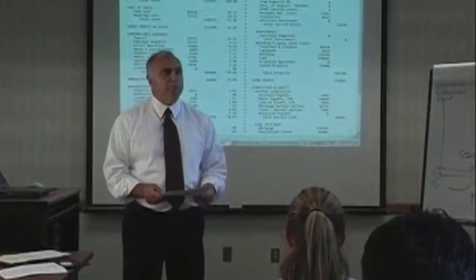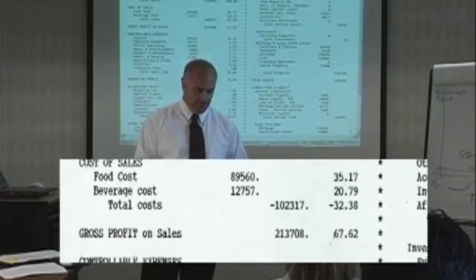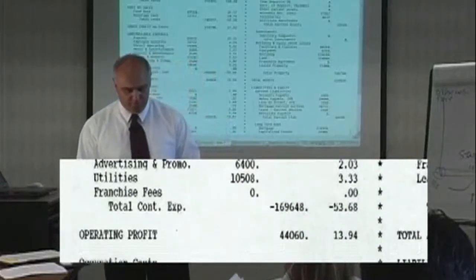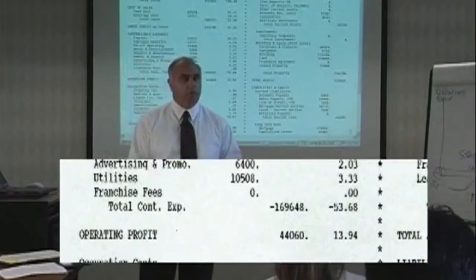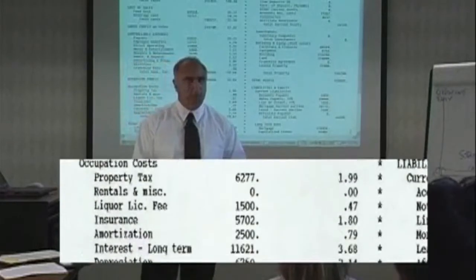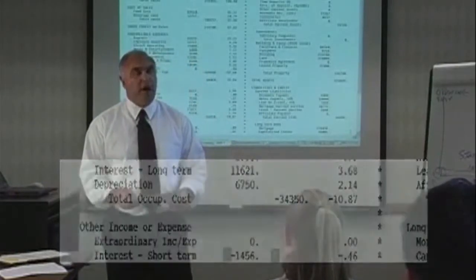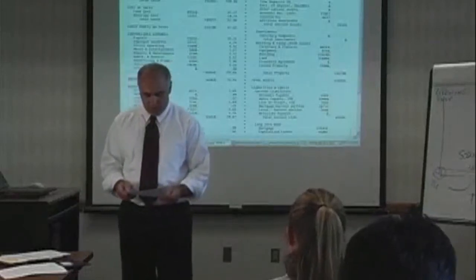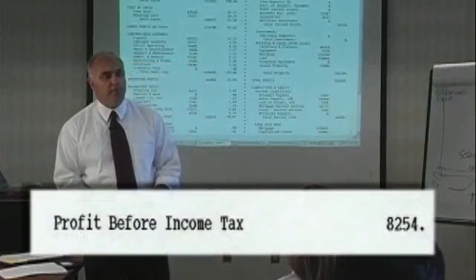We have achieved some operating efficiencies in our controllable expenses and in our cost of sales, so that our operating profit is $44,060, which is greater than the occupation cost of $34,350 in the spring quarter. In the first quarter, the operating profit ran just about $23,500, which resulted in a loss. So at the end of the spring quarter, our profit has gone from negative to a positive $8,254.